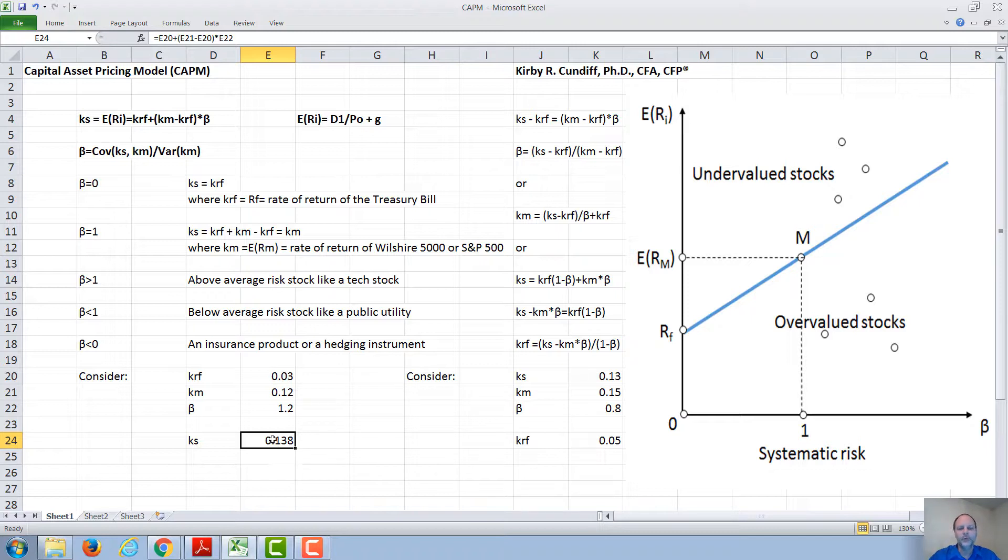If you were to use CAPM as a vehicle to determine what stocks are good to invest in, you might look at a graph like this. We show systematic risk, which is beta, the risk relative to the market,